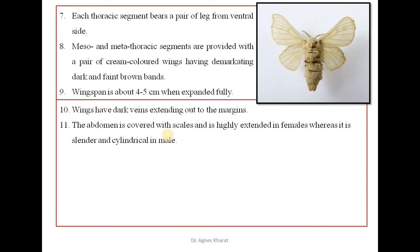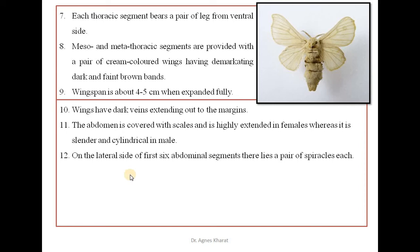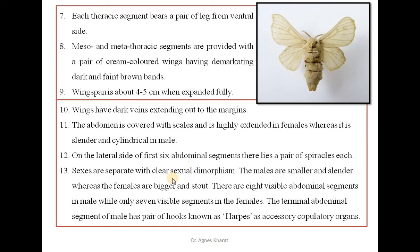The abdomen is covered with scales and is highly extended in females whereas it is slender and cylindrical in males. On the lateral side of the first 6 abdominal segments there lies a pair of spiracles each. Sexes are separate with clear sexual dimorphism. The males are smaller and slender whereas the females are bigger and stout. There are 8 visible abdominal segments in males while only 7 visible segments in females.